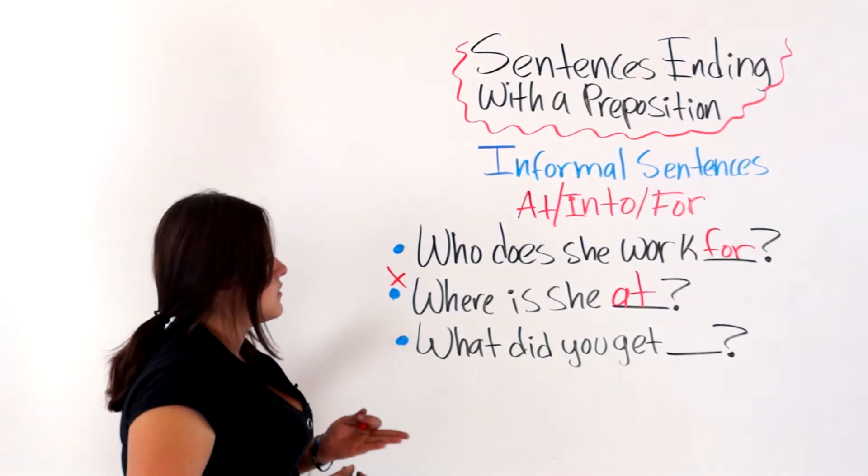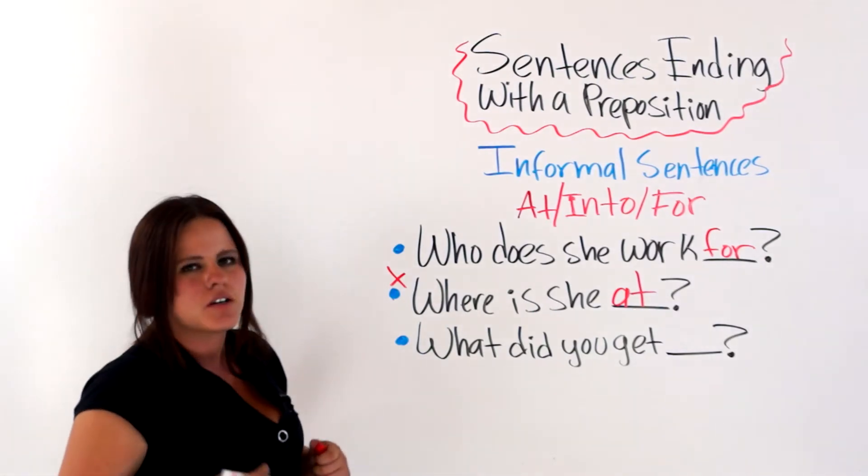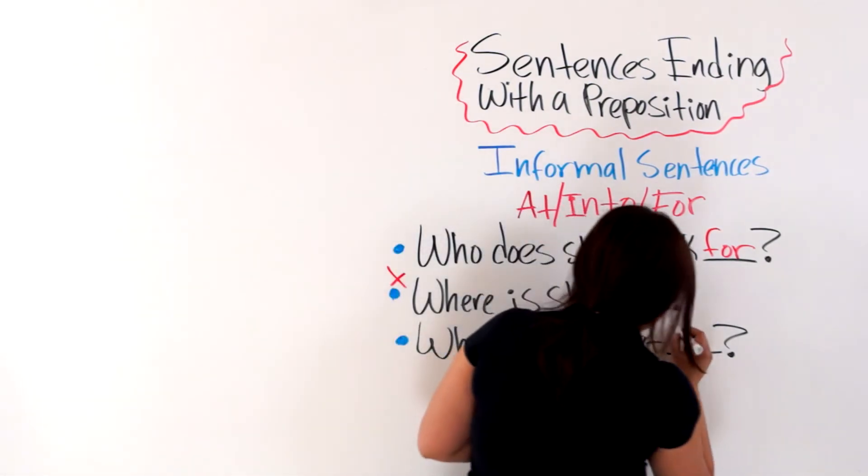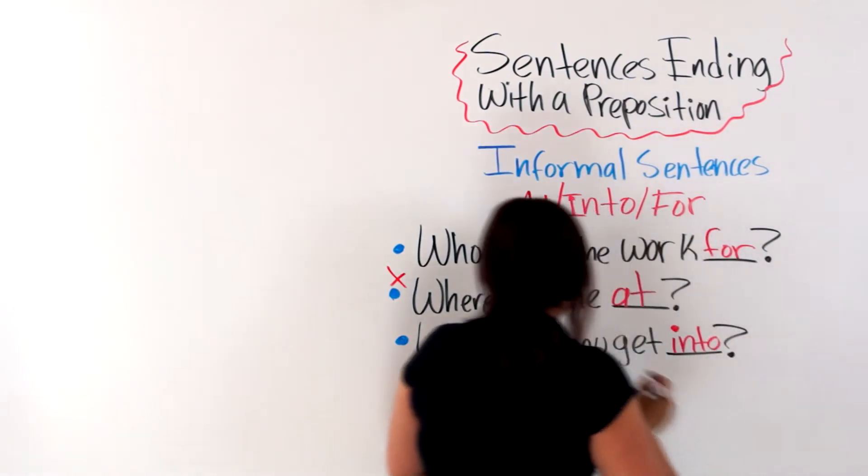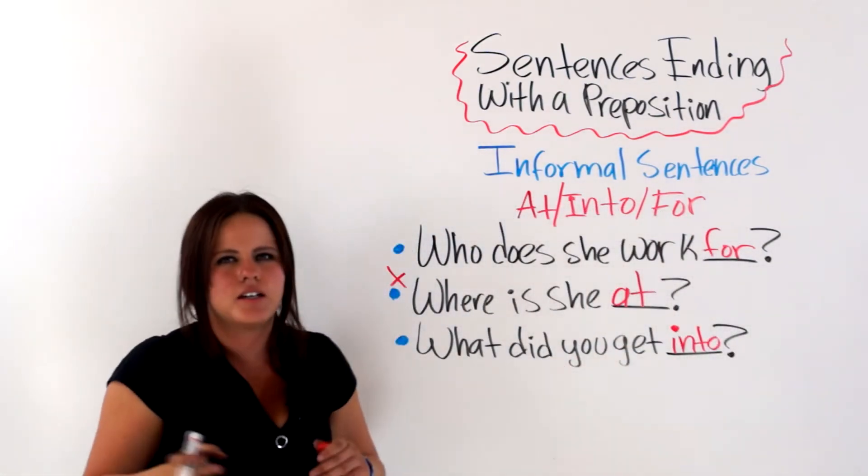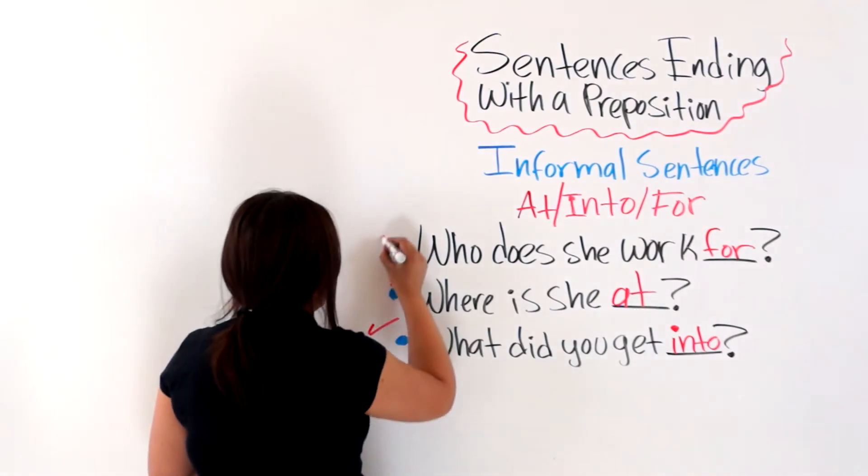And the last one says, what did you get? Should we use at, into, or for? Into. What did you get into? And this is also kind of an idiomatic expression. So these two here are correct.